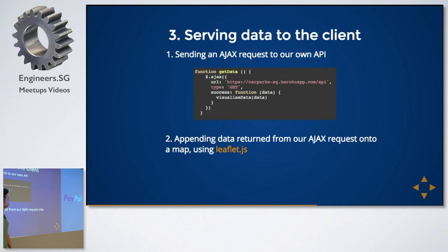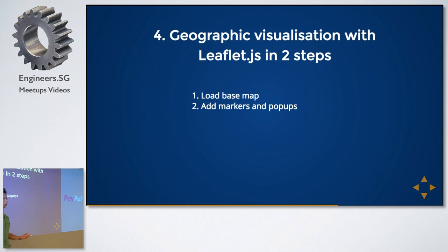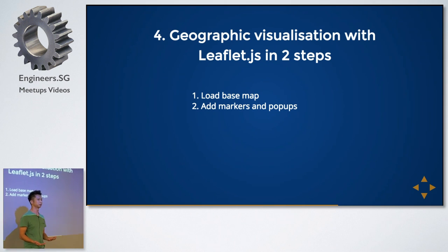Then we send it to the front end, where I make an AJAX request to my /api endpoint and visualize it using Leaflet. Leaflet was a bit intimidating at first — after I read the taxi heatmap article and went through the repo I was confused. But after going through it, it's actually just two steps: load a base map and put the markers on it.